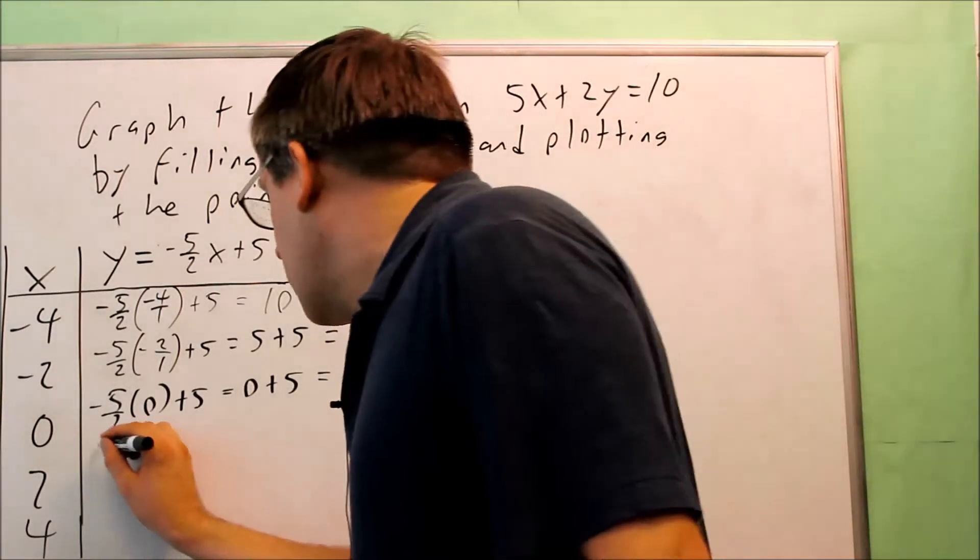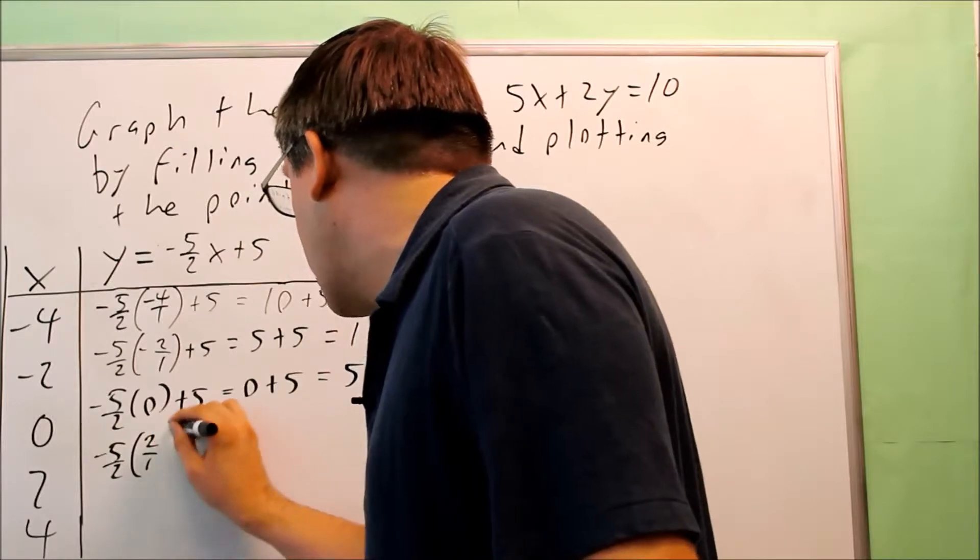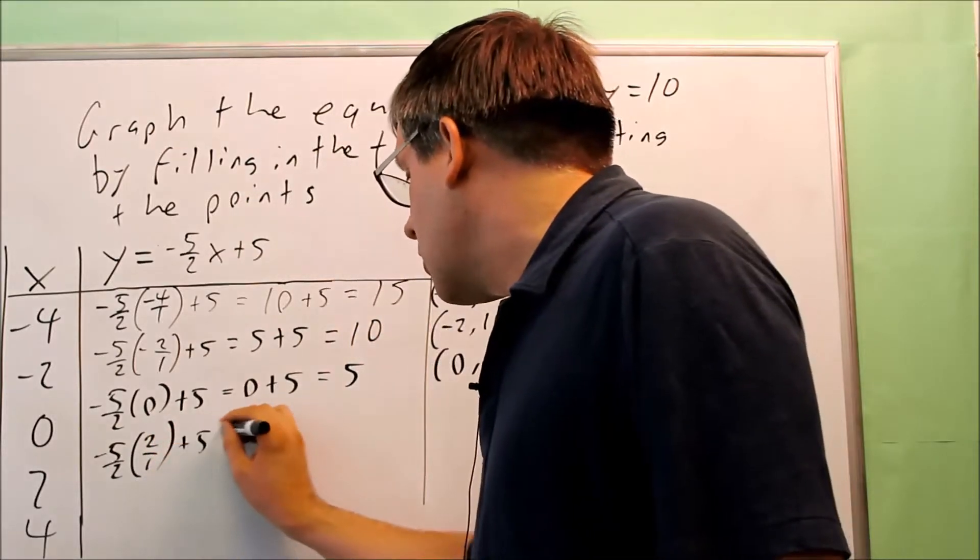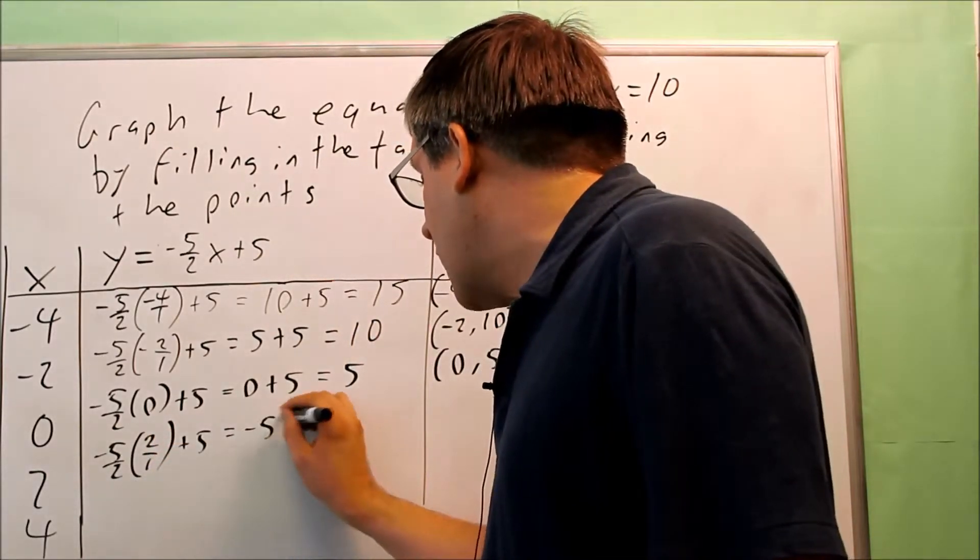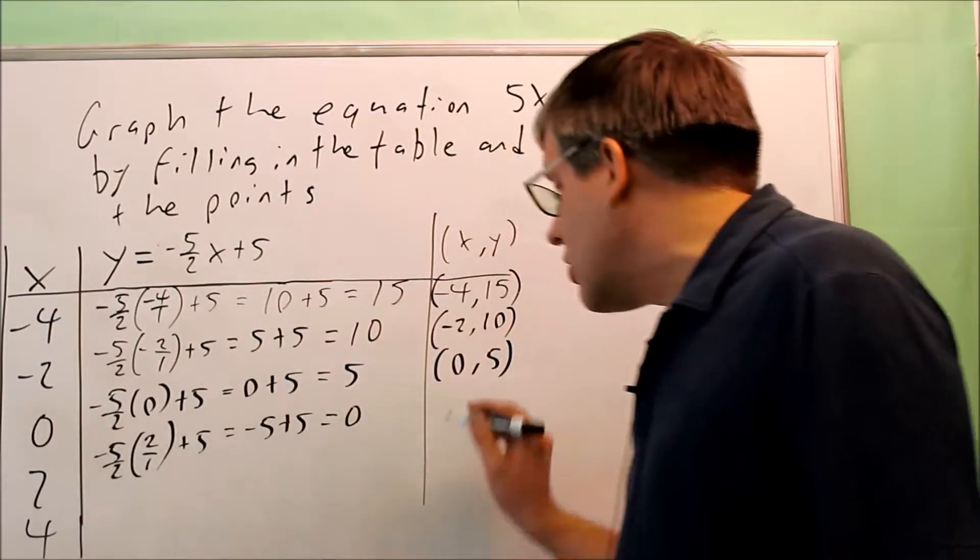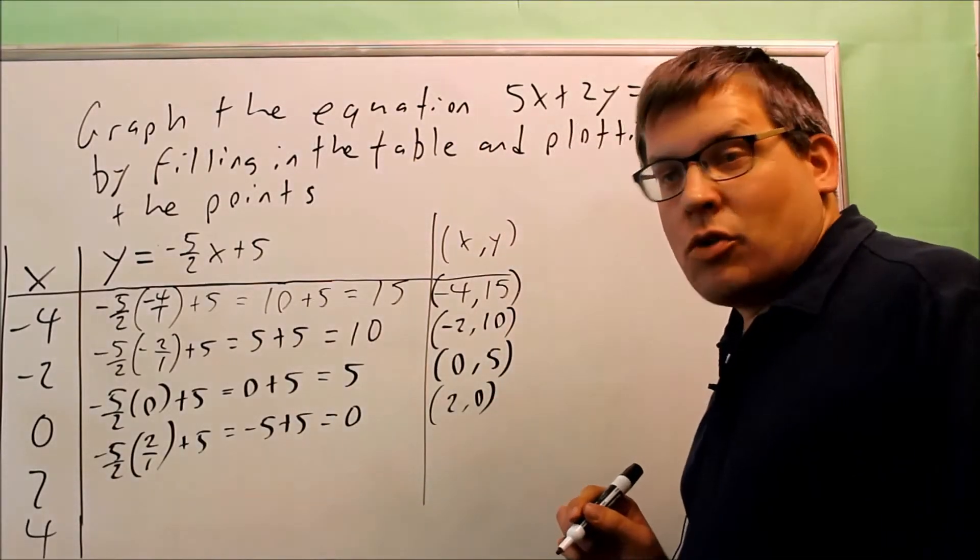With 2, negative 5 halves times 2 over 1. The 2's cancel. And you get negative 5 plus 5. That's going to give you a 0. So 2 comma 0 is the next one.